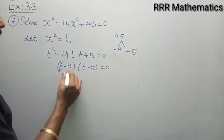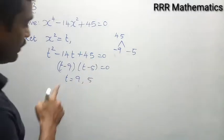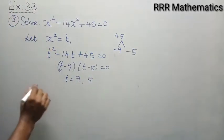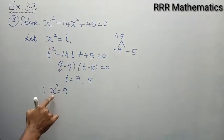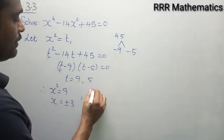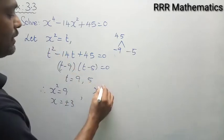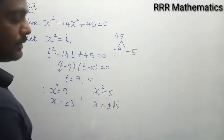When you equate to 0, t value will be 9 and 5. What is t actually? Your assumption. Therefore x² = 9, that is t = 9. Since t is x², so x² = 9 gives x = ±3. And again I have t = 5, that is x² = 5, x = ±√5.